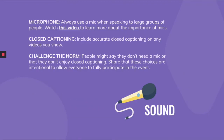Our next topic is sound and ways to support people who are deaf or hard of hearing at your event. First, always use a microphone when speaking to large groups of people — we've attached a video if you want to learn more about the importance of mics. Use closed captioning, and accurate closed captioning, on any videos you show. Finally, challenge the norm: a lot of people might say they don't need a mic or don't like reading closed captions, but these choices are very intentional to allow everyone to fully participate in the event.